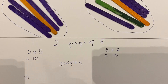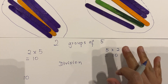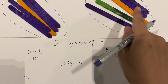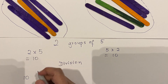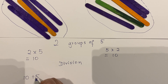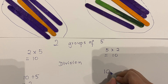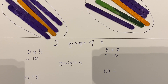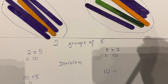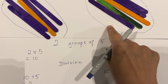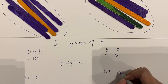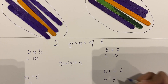For division, you must always start with the total. The total is ten. So if I have ten ice cream sticks and put five in each group, then ten divided by five gives two groups. Or, I can divide the ice cream sticks into two groups: ten divided by two equals five. So you have multiplication and division working together.